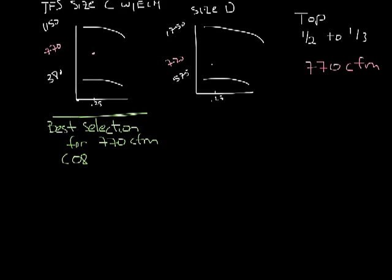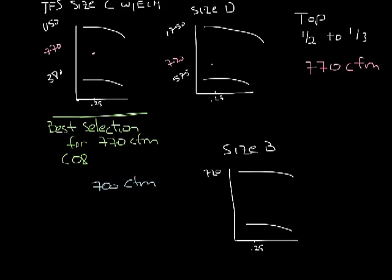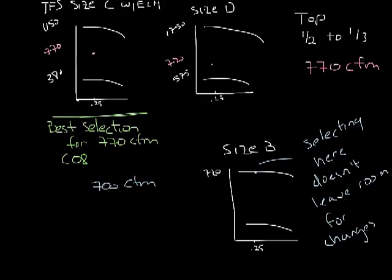Now if you needed 700 CFM, there would actually be three possible unit casing sizes that would work, because the size B TFS with the ECM motor has a fan curve that has a maximum at 720 CFM at 0.25 inches. But in this case, you would be right at the top of the fan curve. Selecting here doesn't give you much leeway in case the pressures are higher than expected, or your airflow requirements change.